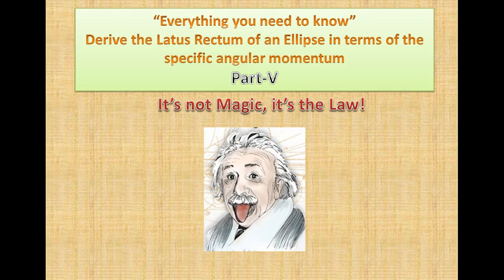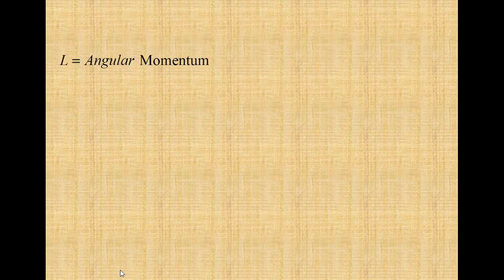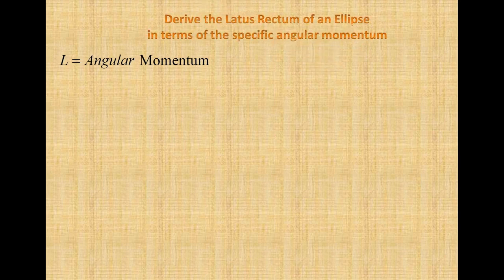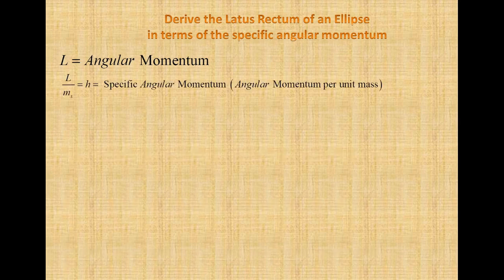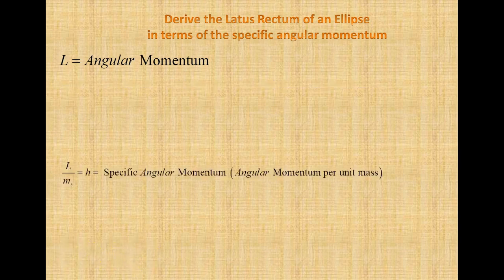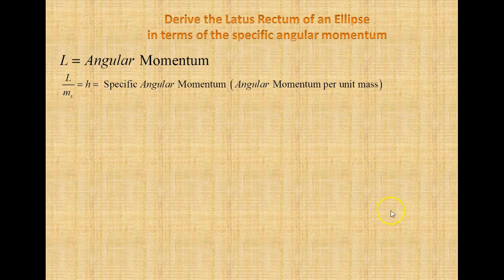Let's get started. Capital L is equal to angular momentum. We're going to derive the latus rectum of an ellipse in terms of the specific angular momentum. Capital L divided by the mass of the satellite is equal to the specific angular momentum — that's the angular momentum per unit mass. I have the mass of the satellite here because I'm using a satellite, but whatever it is — a satellite, an asteroid, or whatever — is orbiting on this ellipse.